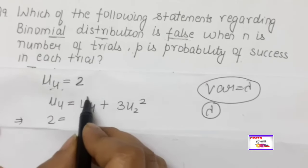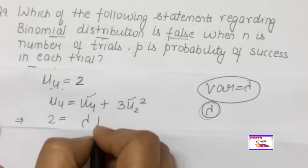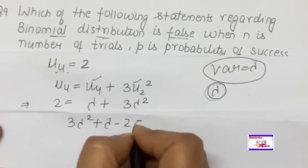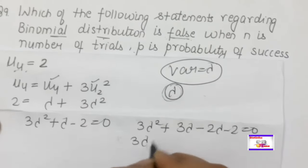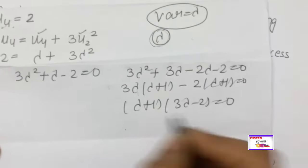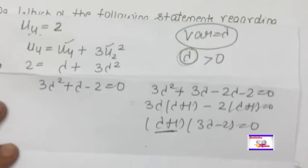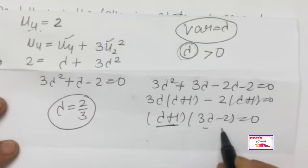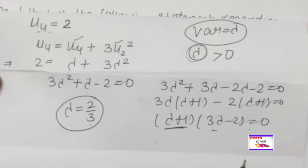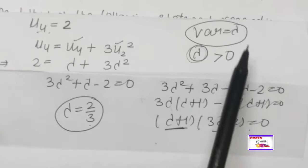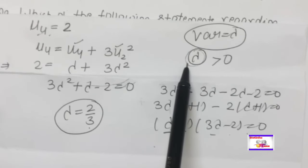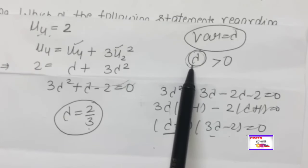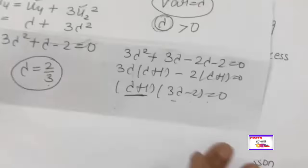Substituting μ₄ = 2: λ + 3λ² = 2, giving 3λ² + λ − 2 = 0. Factoring: (3λ − 2)(λ + 1) = 0, so λ = 2/3 or λ = −1. Since λ is a parameter and must be > 0, λ = 2/3. This is both the mean and variance of the Poisson distribution. Remember: all cumulants of the Poisson distribution equal its parameter λ. The answer is 2/3.